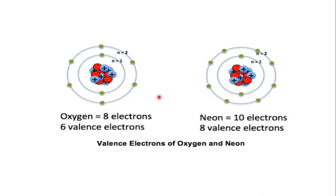For oxygen with atomic number 8, we have 8 electrons: 2 in the first shell and 6 in the second shell. The L shell is the valence shell, so oxygen has 6 valence electrons. Similarly, for neon with atomic number 10, we have 2 in the K shell and 8 in the L shell. The L shell is the valence shell for neon, and there are 8 valence electrons.